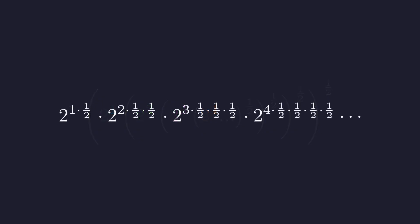The first term gets raised to the one-half power. The second gets one-half times one-half. The third gets one-half times one-half times one-half, and so on.